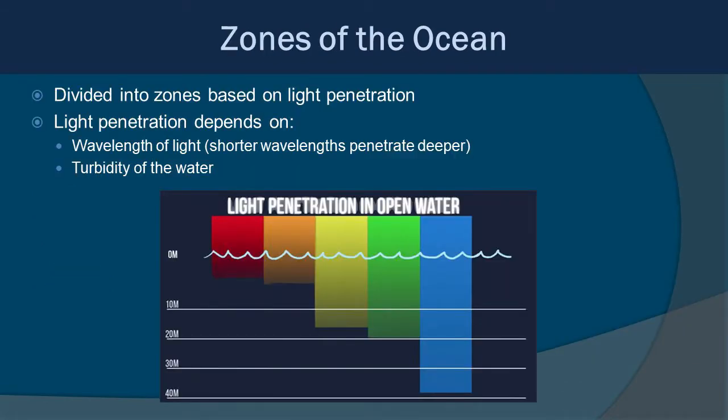We can divide the ocean into zones based on light penetration. The deeper you go, the darker it gets. Light penetration — how deep light goes into the ocean — depends on the wavelength of light itself; shorter wavelengths penetrate deeper. That's why you see more greens and blues as you go deeper, and the reds and oranges fade out in the shallower water. We also have to look at turbidity, essentially how murky the water is with particles. The more turbid the water, the less light penetrates.